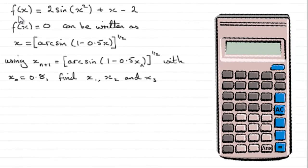Now, for this part of the question, we've got f(x) equals 2 sin(x²) + x - 2. When f(x) equals 0, we're told that this equation can be written as x equals arcsin(1 - 0.5x) to the power 1/2.